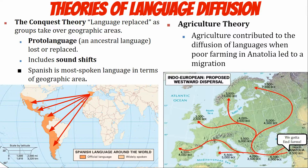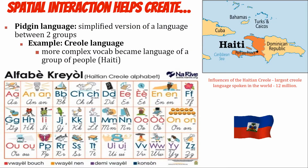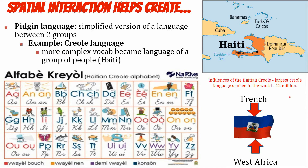Haiti is a great case study in language convergence. The original Arawak people encountered Spanish, African, English, and Portuguese influences. They created a simplified language called a pidgin to help people communicate. Over four or five hundred years, this simplified language gained grammatical rules and complexity, eventually becoming a creole. Haiti's creole is the world's most spoken creole — about 12 million speakers — comprising mostly French and West African words, with aspects of English, Portuguese, Taino, and Spanish.